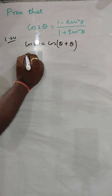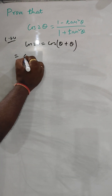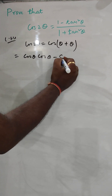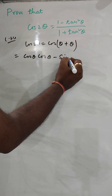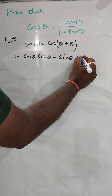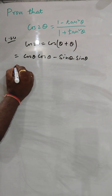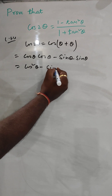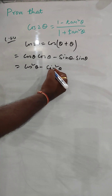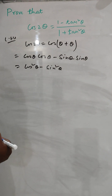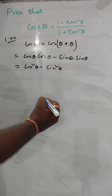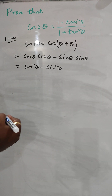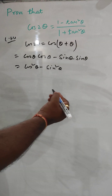The cos(A + B) formula gives us cos θ into cos θ minus sin θ into sin θ, which is nothing but cos²θ minus sin²θ. We can divide this by 1, which means we can divide by sin²θ plus cos²θ, since sin²θ plus cos²θ equals 1.